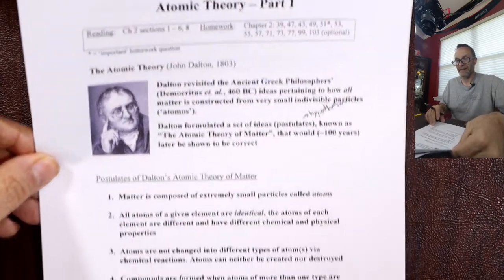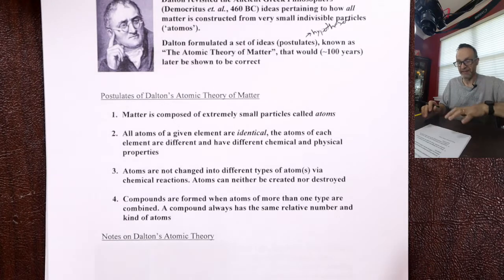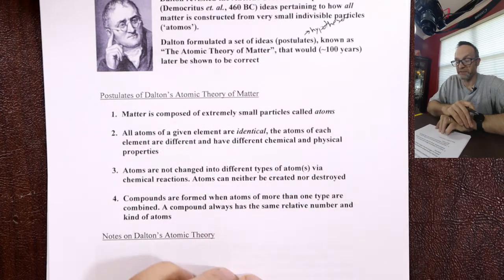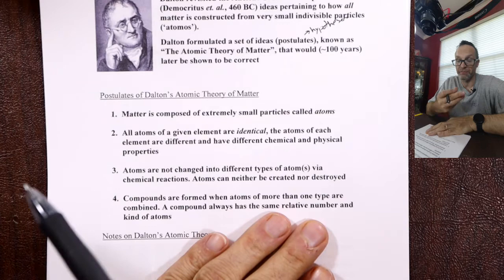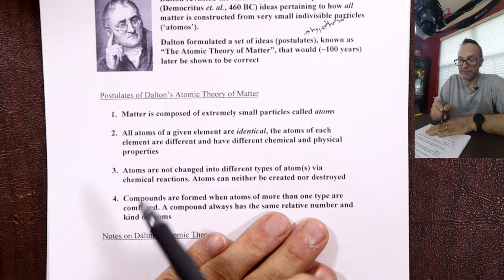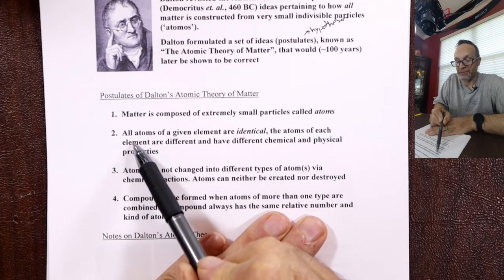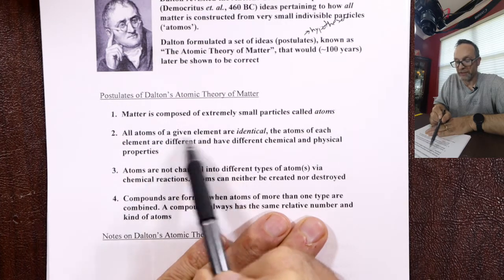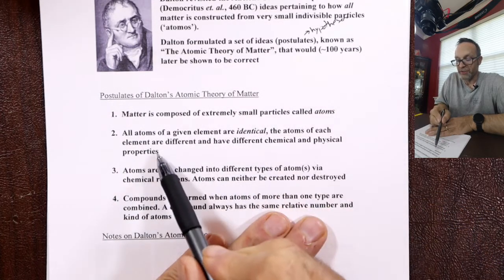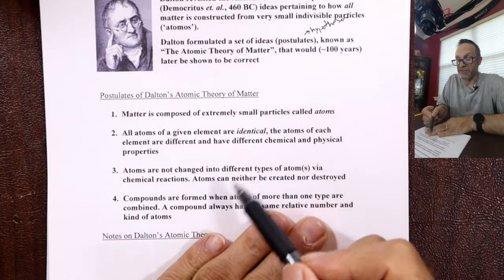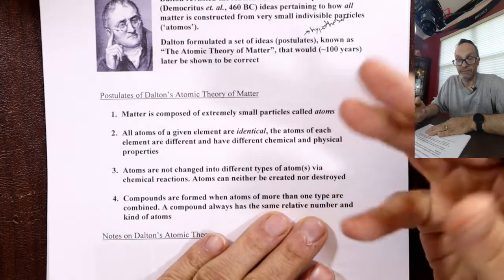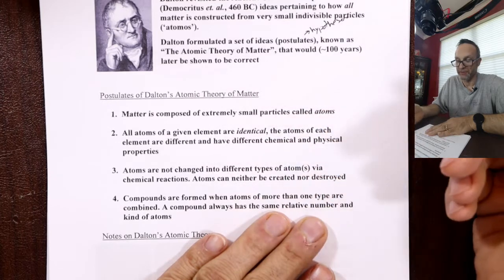His first postulate: matter is composed of extremely small particles called atoms. Each piece of matter can be divided down into things called atoms — the smallest stable piece. The second postulate: all atoms of an element are identical. Atoms of the same type stuck together make an element. Each atom type — each element — has unique chemical and physical properties because they're all the same kind of atom. Atoms are themselves unique, but atoms of an element are identical.